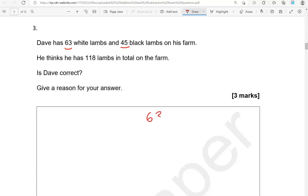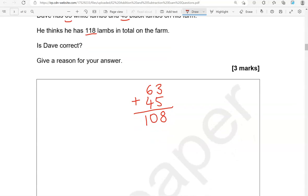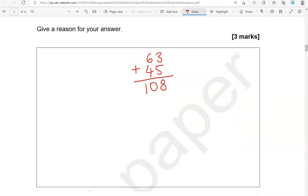So 63 add 45. Starting with the units, always. 3 and 5, that is 8. 6 and 4, that is 10, so 108. And that's not 118. So is Dave correct? We're going to say no, he is not correct.